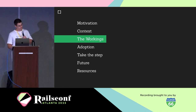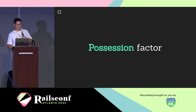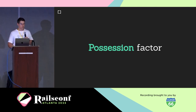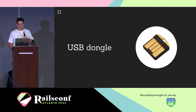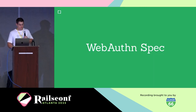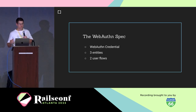Now let's move on to how WebAuthn works internally. WebAuthn's baseline is that it gives us a strong possession factor — possession of a WebAuthn credential — held through hardware devices, security keys, phones, or laptops. The standard defines three things: the WebAuthn credential, three entities, and two user flows.